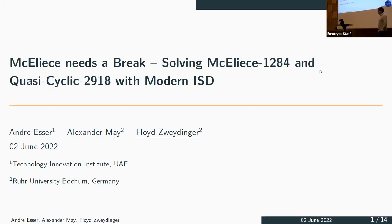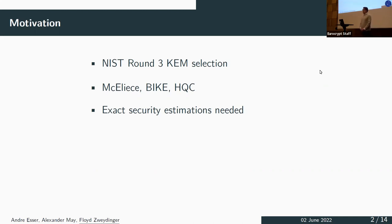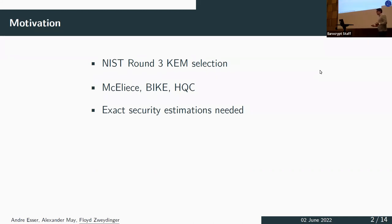We had a little bit of luck. The NIST Round 3 selection process is finally closing down, and there are three code-based crypto schemes still left in the competition: Classic McEliece as a finalist, and two alternative candidates, BIKE and HQC. For every candidate, but especially for the code-based schemes, we need exact security estimates to argue about security, performance, and everything.